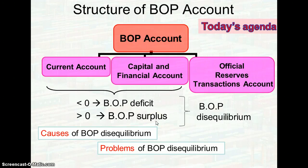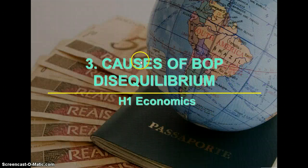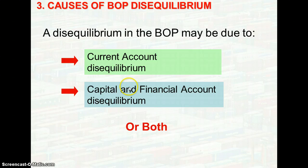Hi students. Just to do a simple recap of the topic we went through previously on the structure of balance of payment. What I have gone through is when there is a deficit or a balance of payment surplus, this is known as balance of payment disequilibrium. Let us look at the next part: what causes the balance of payment disequilibrium. It could be due to a current account disequilibrium, a capital and financial account disequilibrium, or both accounts facing disequilibrium.